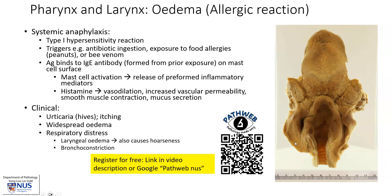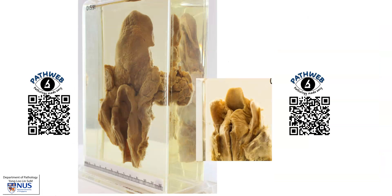You can access this virtual pathology specimen, just as I showed you earlier, through our virtual pathology museum in our online resource, PathWeb. The registration link is in the video description, or you can simply Google PathWeb NUS and click on the registration tab. Here is the side-by-side comparison of the very swollen epiglottis and laryngeal structures compared to a normal epiglottis and larynx.